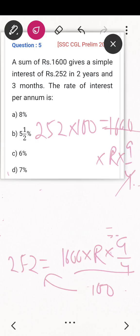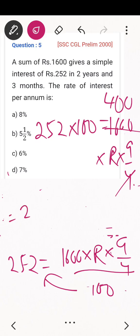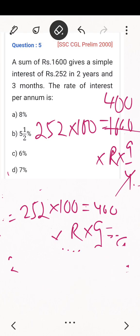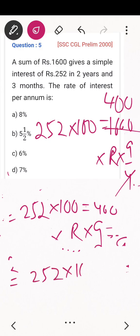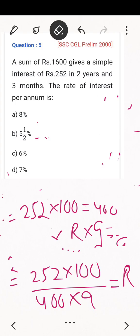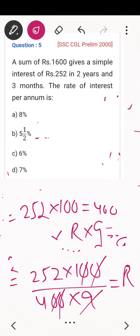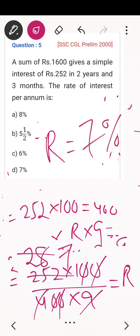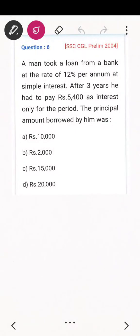Continuing: 252 × 100 = 1,600 × R × 9/4. Simplifying 1,600 ÷ 4 = 400, so 252 × 100 = 400 × R × 9. Calculating R: 25,200 = 3,600 × R, so R = 25,200 ÷ 3,600 = 7. So the rate of interest is 7 percent.